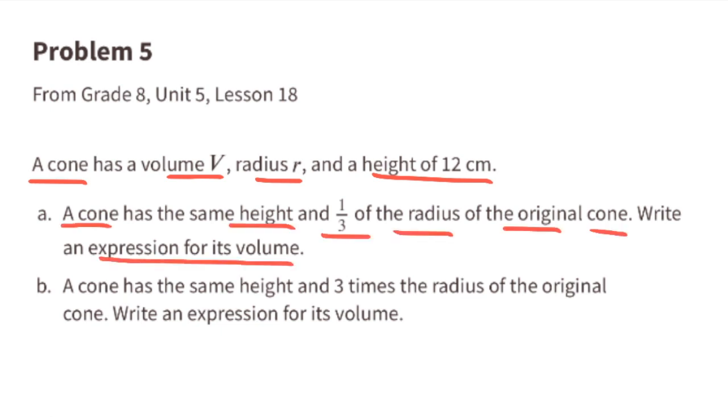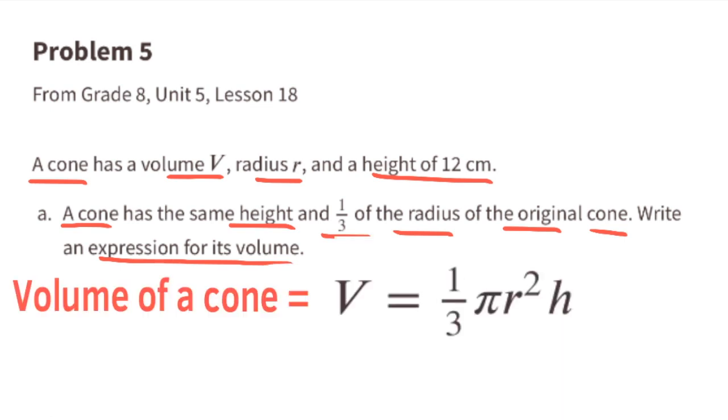A. A cone has the same height and one-third of the radius of the original cone. Write an expression for its volume. The formula for the volume of a cone is V equals one-third pi times r squared times its height.